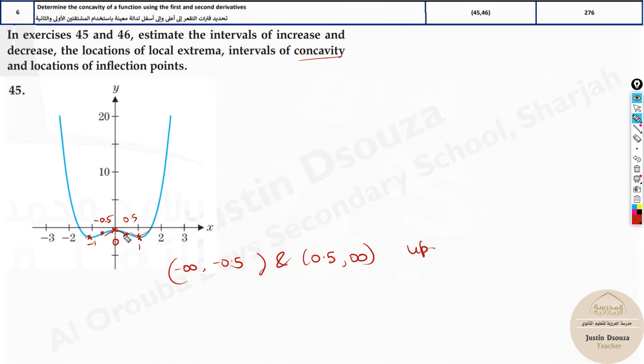Where is it concaving downwards? From minus 0.5 to positive 0.5. This is down.